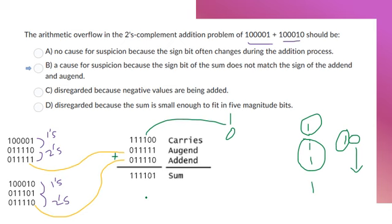So we can see this sign is negative. That's positive and that's positive. So that's what's saying here, cause for suspicion, because the sign is negative. The sign bit of the sum doesn't match the sign of the addend and augend. They don't match.